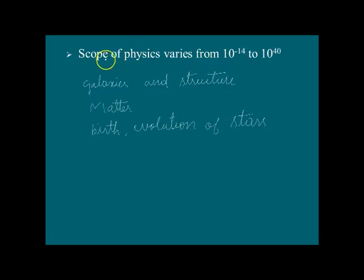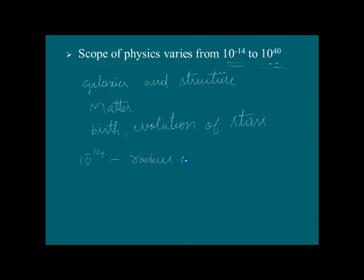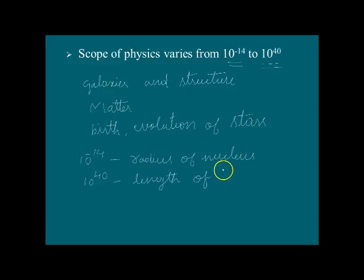The scope of physics, if we consider in terms of length, varies from 10 raised to minus 14 to 10 raised to plus 40. The value 10 raised to minus 14 represents the radius of a nucleus, and 10 raised to plus 40 represents the length of a galaxy. That's why the scope of physics is said to vary from nucleus to infinity.